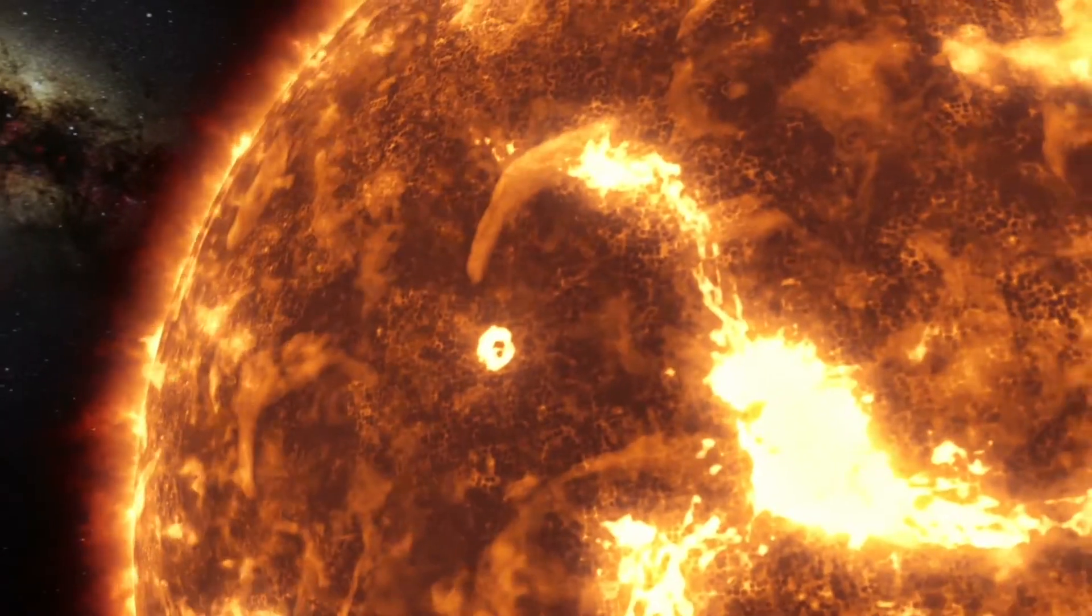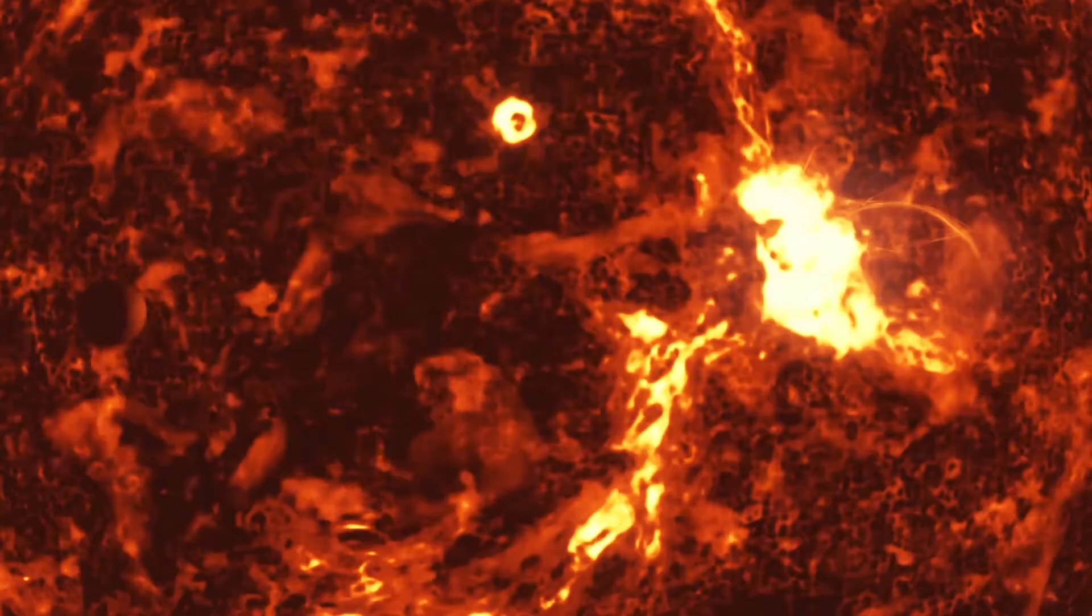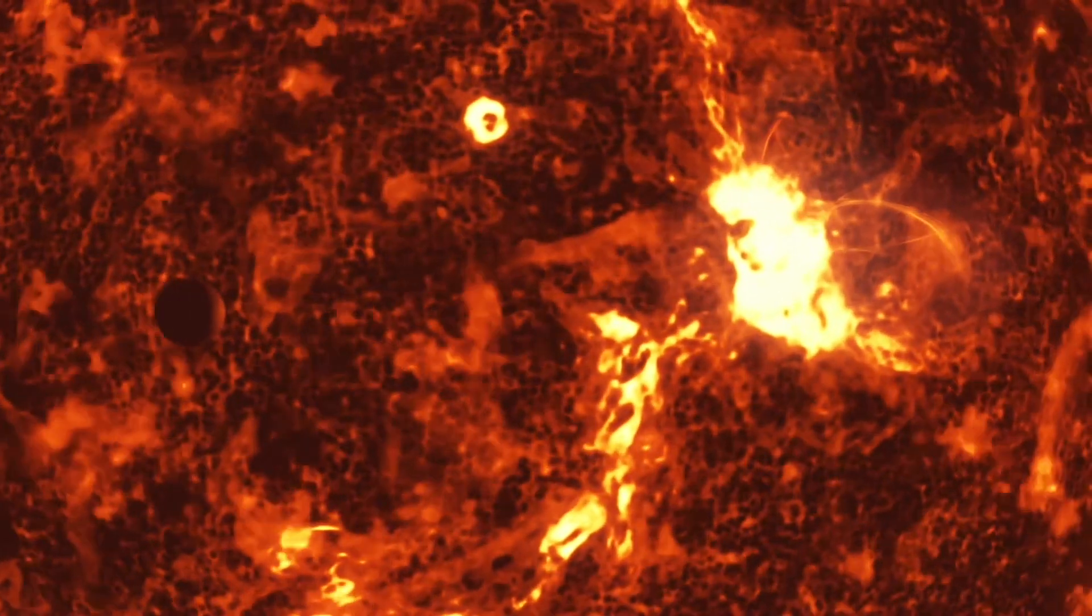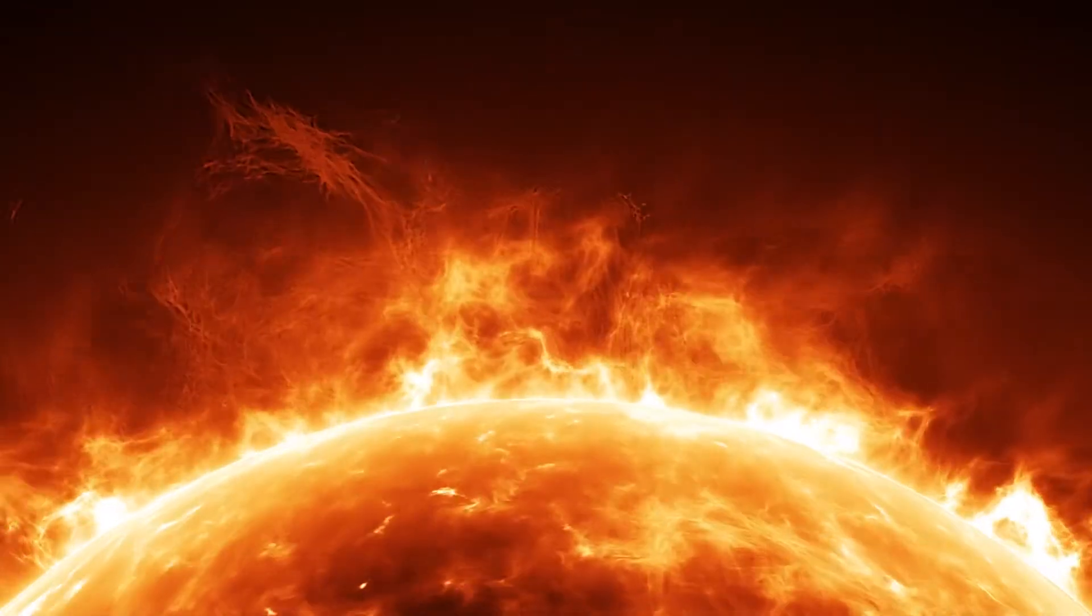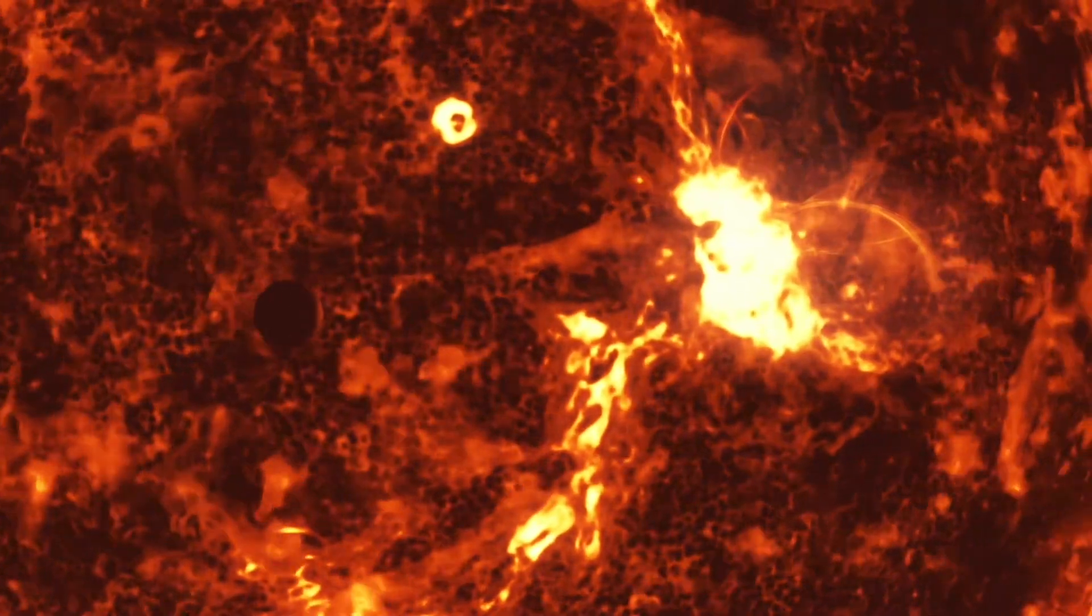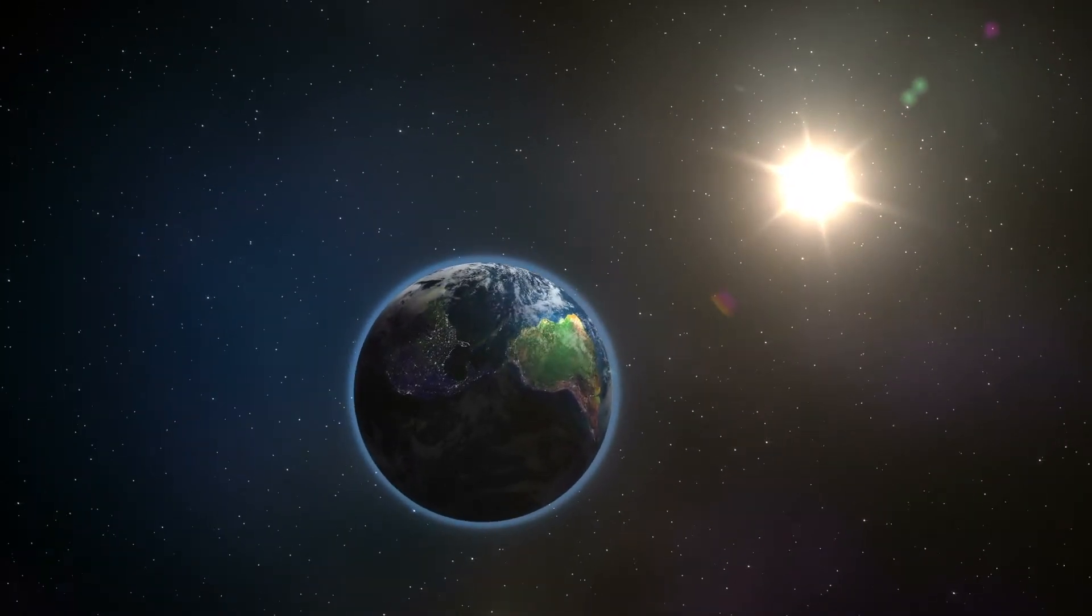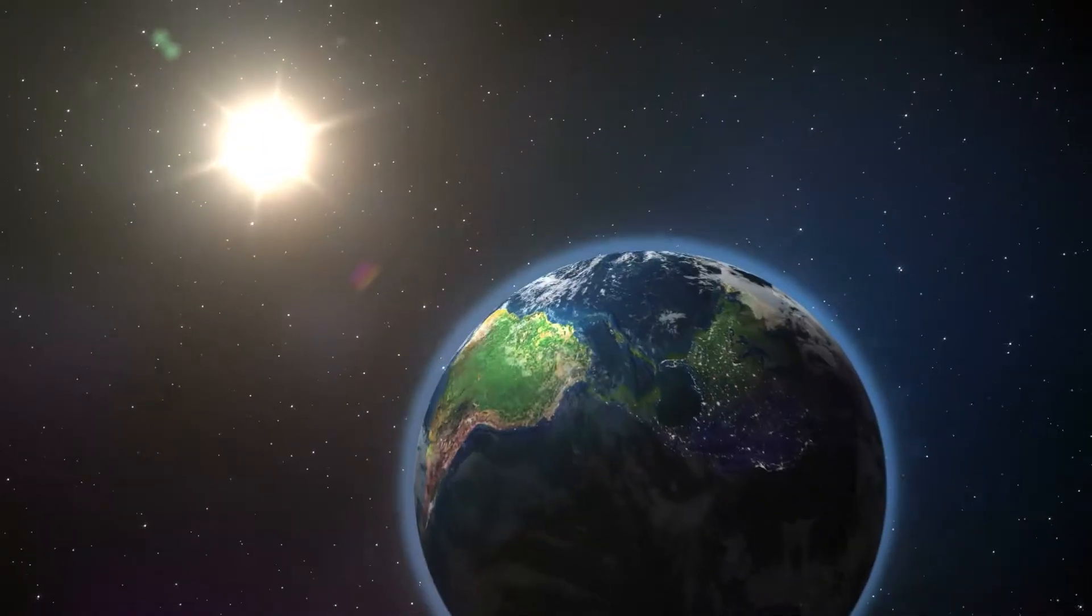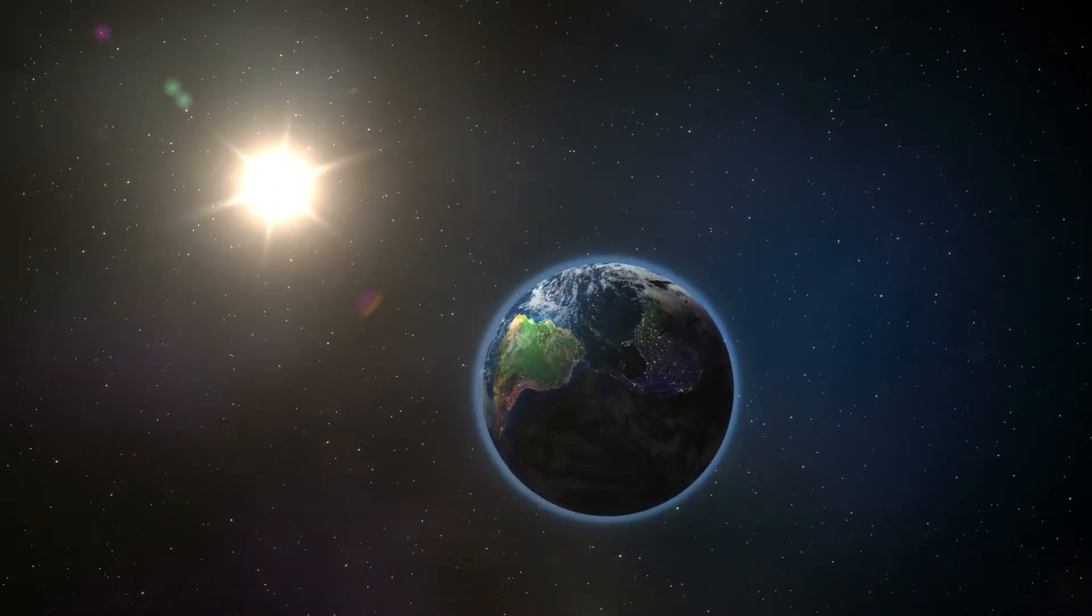5. Every 11 years, solar activity surges. The Sunspots that pepper the Sun explode, hurtling massive clouds of gas, known as CMEs, throughout the solar system. This is called solar maximum. The Sun also reverses its overall magnetic polarity, its north magnetic pole becomes a south pole, and vice versa.